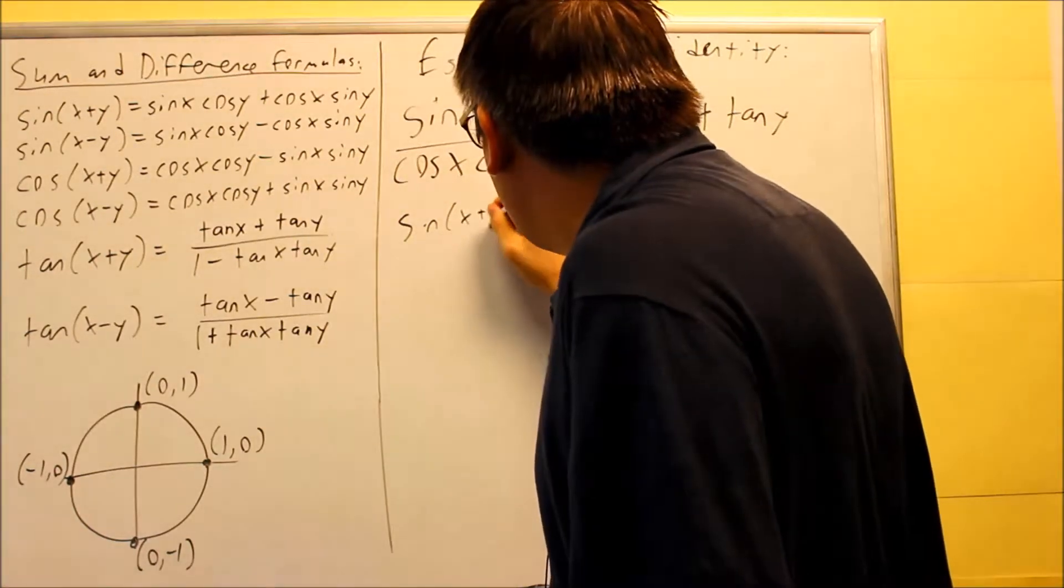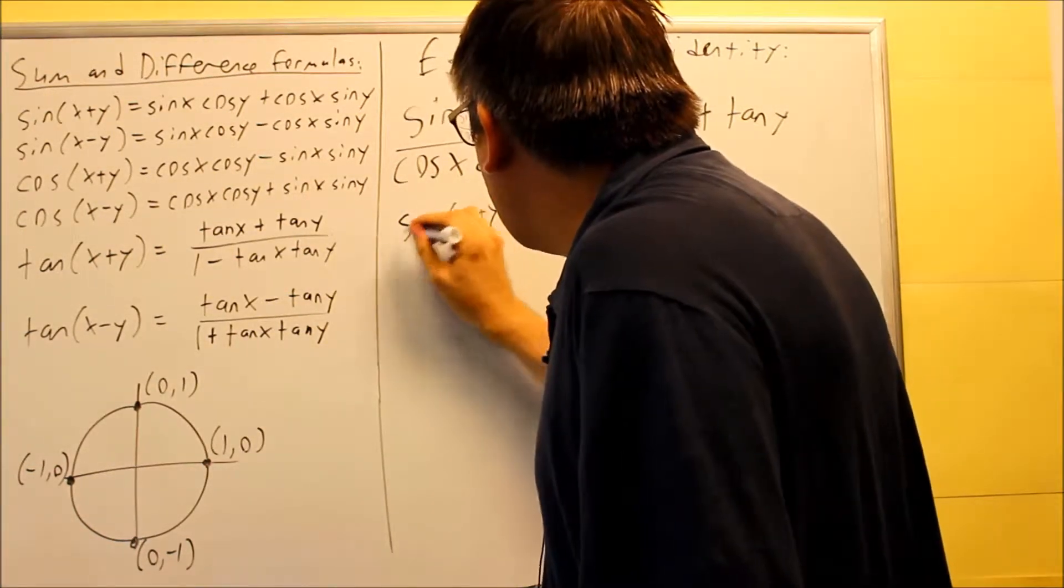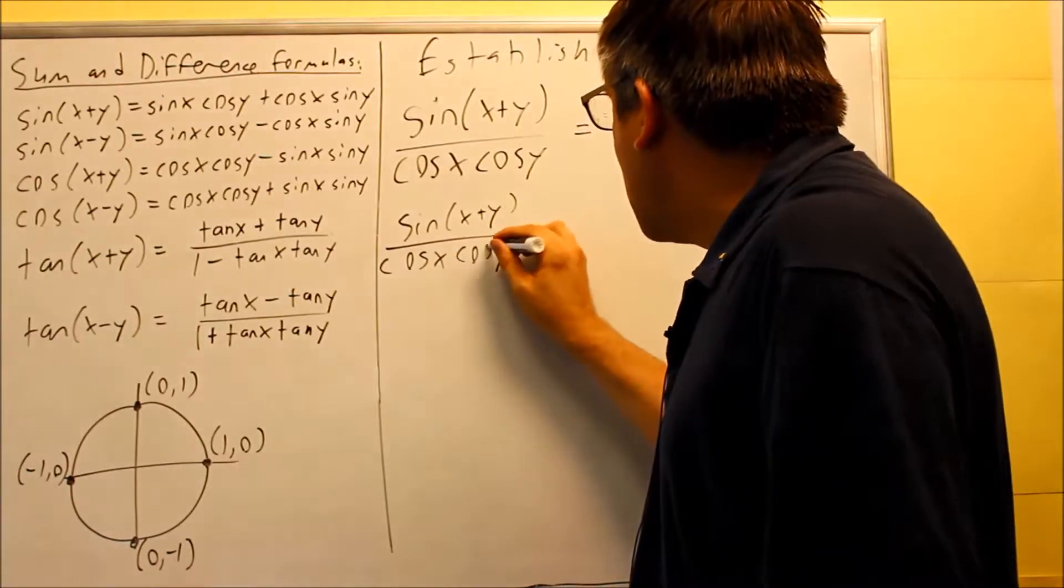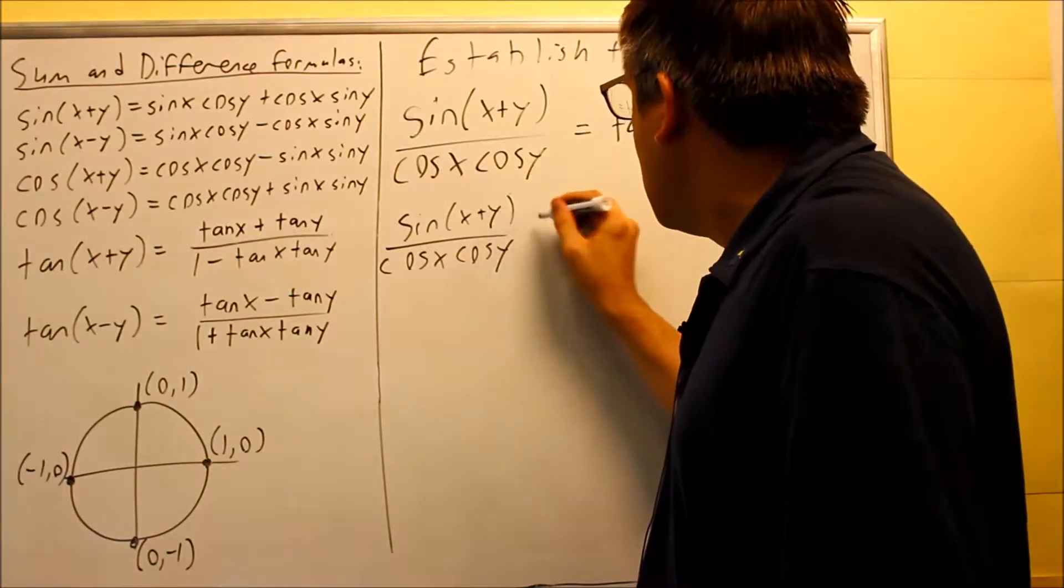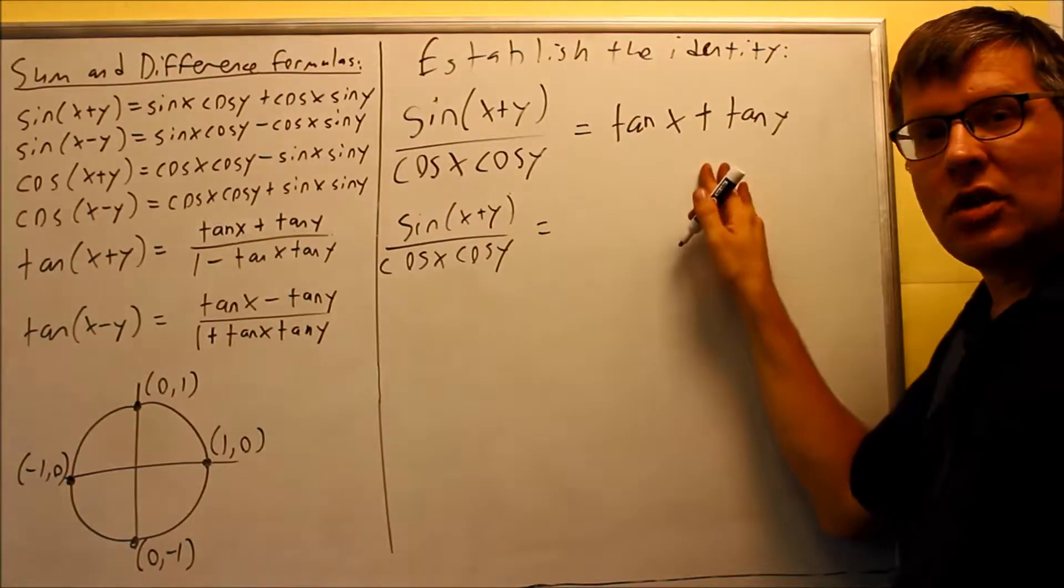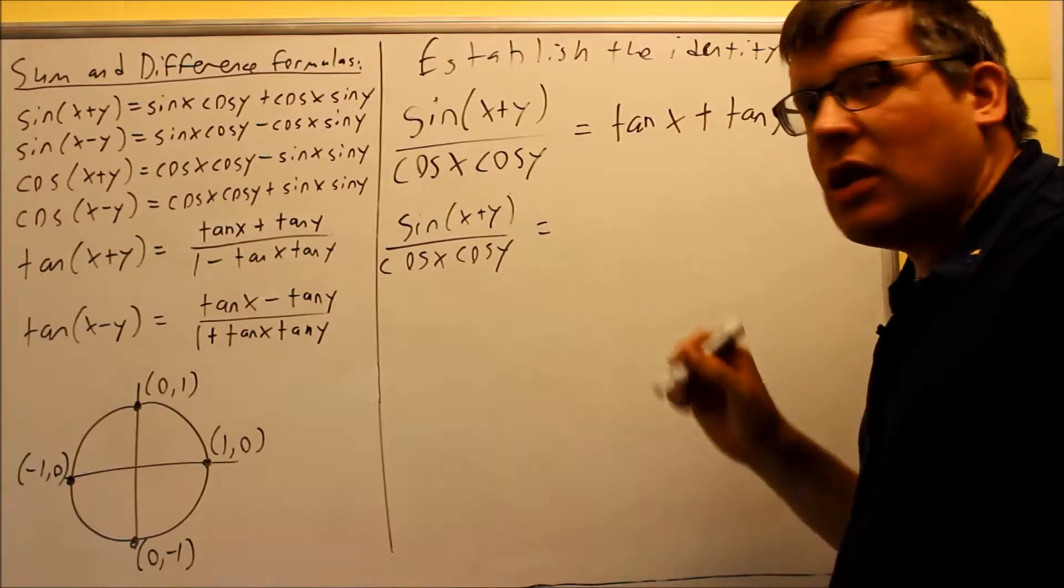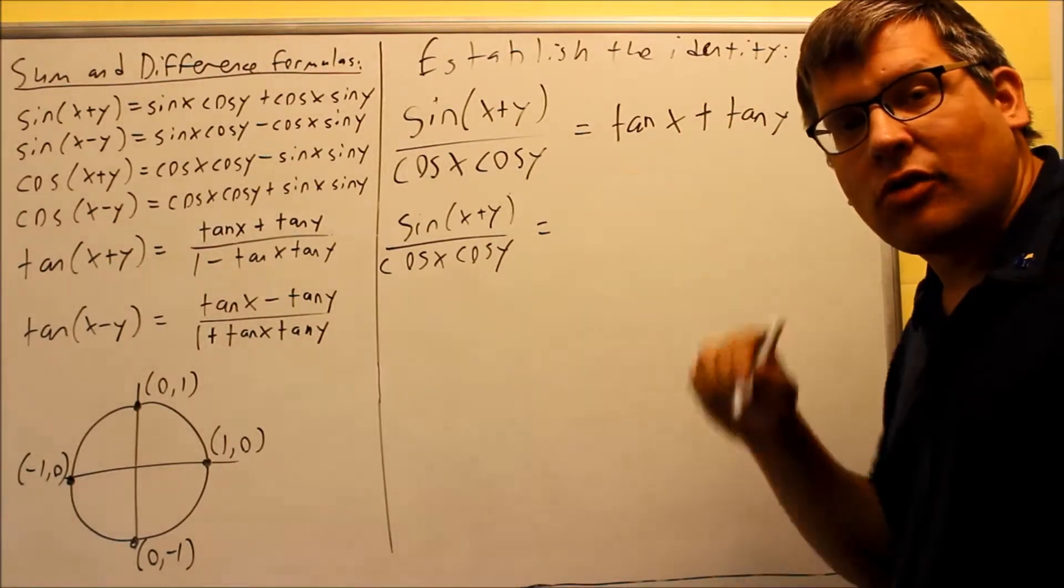So this one I'm just going to rewrite as it is, and then on the right-hand side, I'll put in our identity. So I have this, this is the same. And over here, I'm going to put identities in for tangent x and tangent y. Tangent can be written as sines and cosines, sine over cosine. So we're going to do sine x over cosine x.